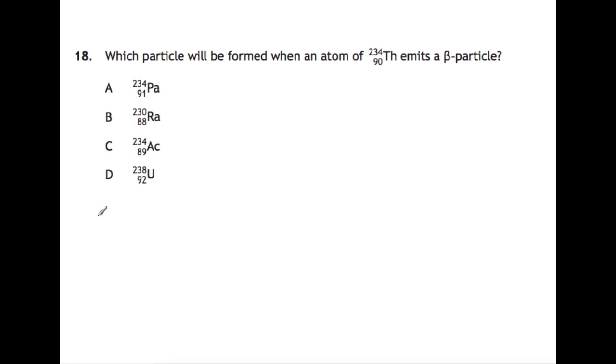Question 18. Which particle will be formed when an atom of thorium-234 emits a beta particle? So if we write out the equation for this. A beta particle has the symbol of 0 mass minus 1 here and it is an electron. So we need the mass on either side to be the same. So whatever particle you create is going to have a mass of 234 but the atomic number is going to increase by 1. So when you do 90 plus 1 we get 91. If we look this up in the data book you'll find that the symbol is PA and that is answer A.